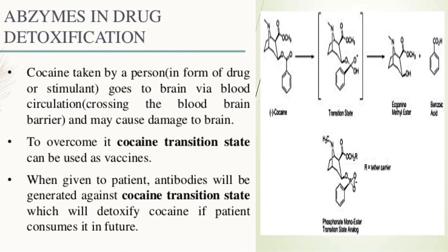Abzymes in drug detoxification: cocaine taken by a person goes to the brain via blood circulation, crossing the blood-brain barrier, and may cause damage to the brain. To overcome this, cocaine transition state can be used as a vaccine. When given to a patient, antibodies will be generated against the cocaine transition state, which will detoxify cocaine if the patient consumes it in the future.